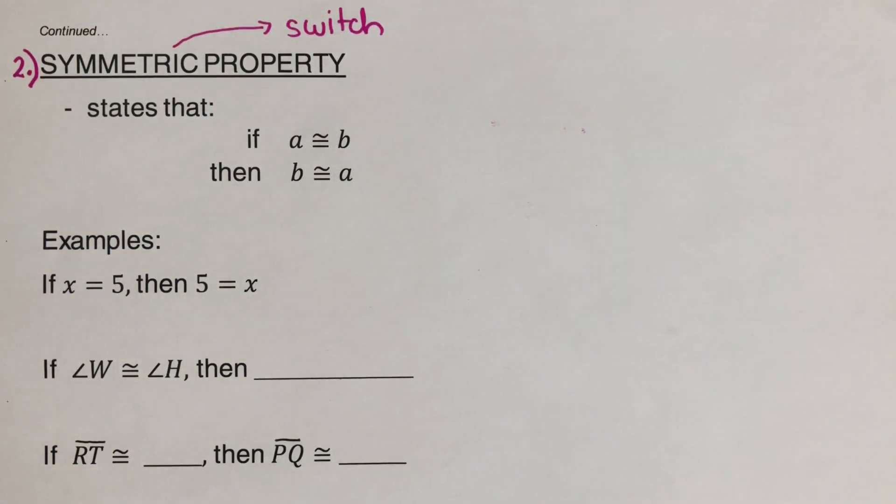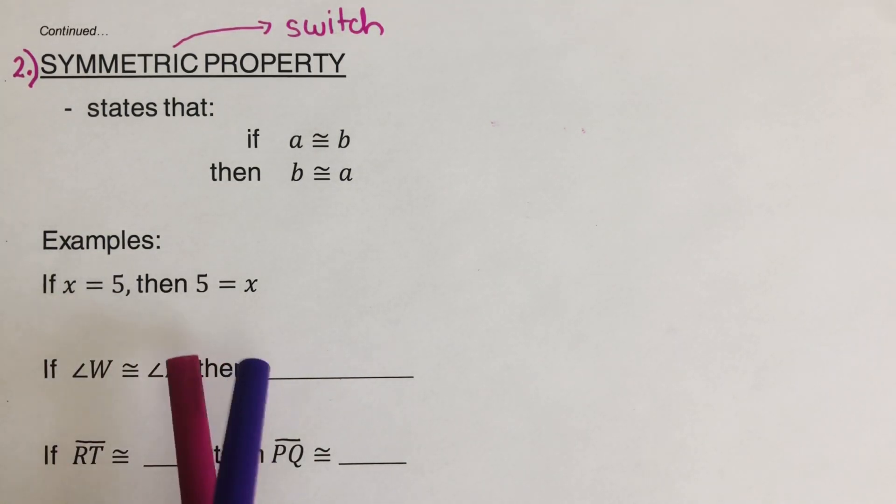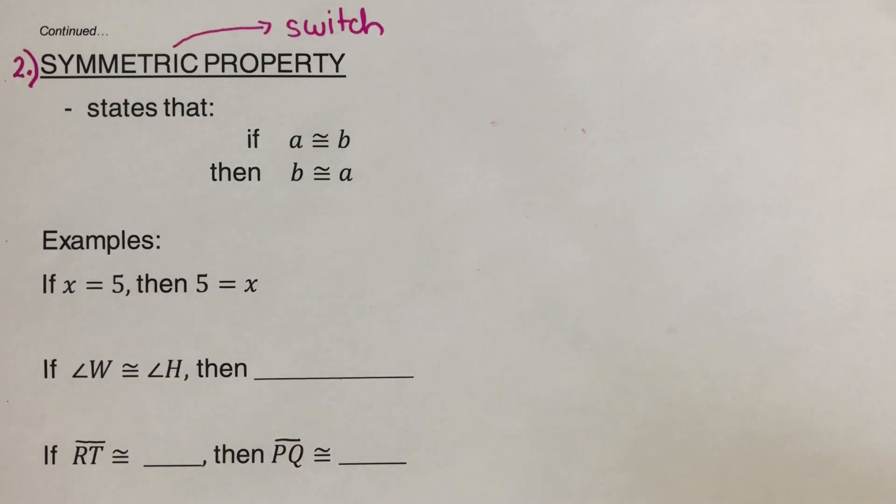So let's have an example here. If X is equal to 5, then 5 is equal to X. So what I did was the X and the 5 was switched around, and they're still equal. Now try these three out on your own.